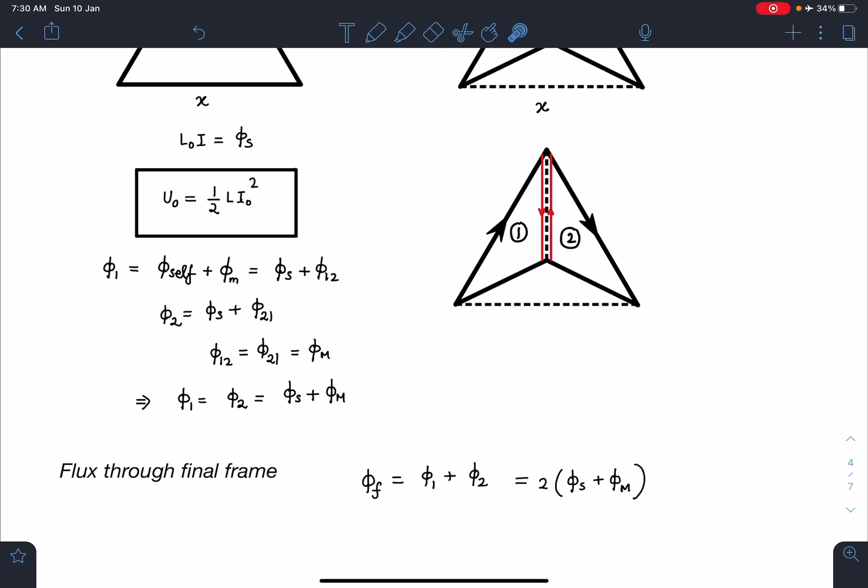Somehow I need to find out this φ_m, mutual flux I have to find due to one triangle passing through, flux passing through one triangle due to another triangle that I have to find out. In case of tetrahedron all are symmetrical. We will be using that entire geometry here.